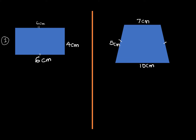Now if we have four centimeters here, then this one will also be four centimeters. Since we know that perimeter is the distance around the figure, we are going to get our perimeter as six plus four plus six plus four, and this will give us 20 centimeters. That's how we get the perimeter — add all the sides of the figure.